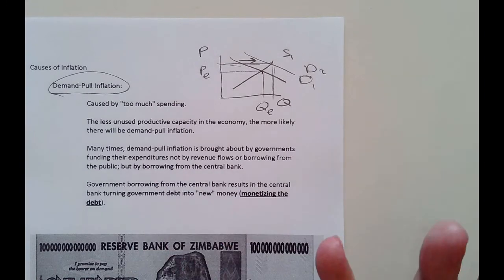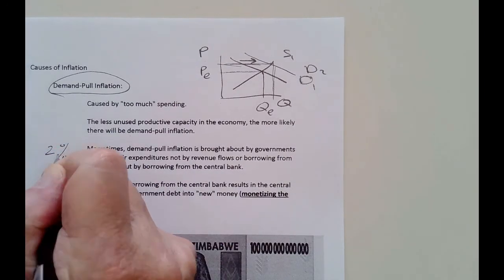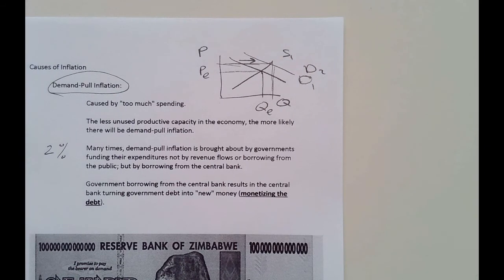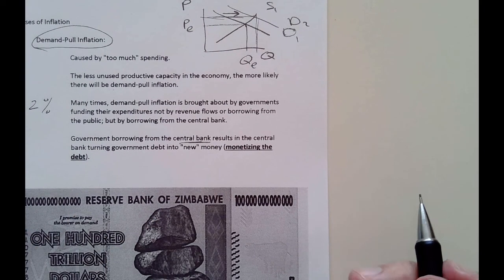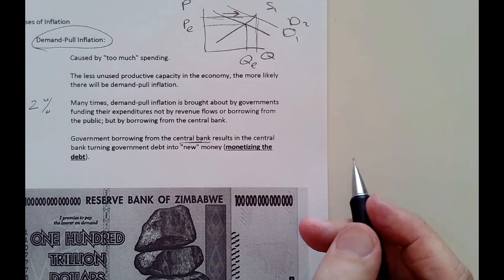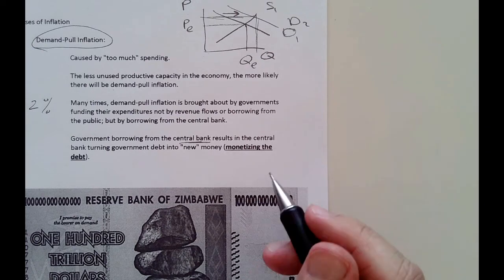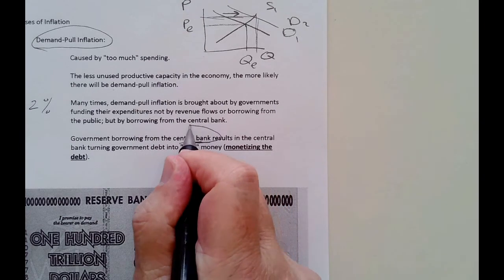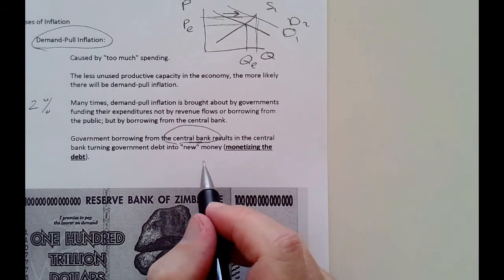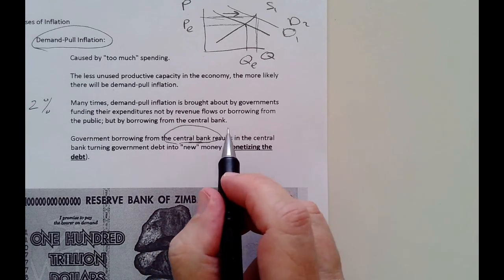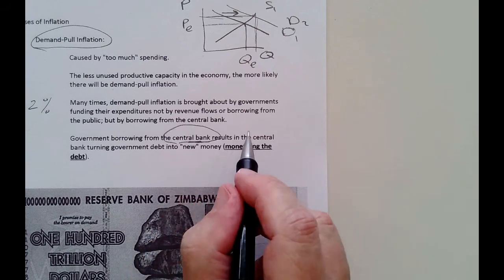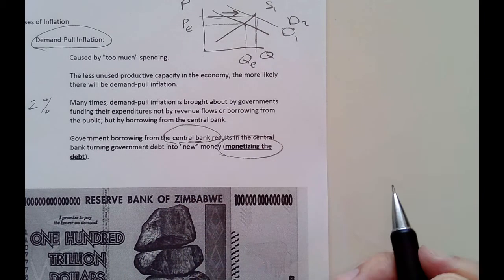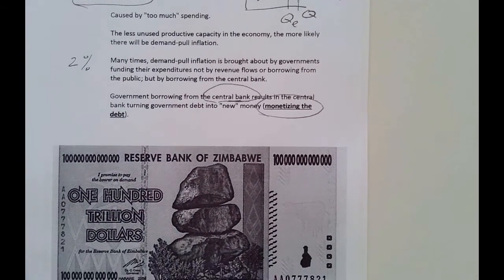Moderate inflation caused by demand increasing is pretty okay — prices rising about 2% a year is not a bad number. But when prices start rising dramatically, demand has increased by too much. This is usually caused by the government borrowing from the central bank. When the government borrows from you and me or from banks, that money was already there. But when they borrow from the central bank, that's new money. Whenever the central bank buys government debt, that is called monetizing the debt — turning the debt into money.